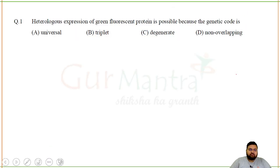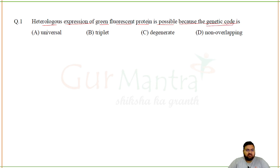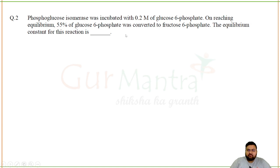Let's begin with the very first question: heterologous expression of green fluorescent protein is possible because of the genetic code being — what? The heterologous expression of GFP we can observe everywhere — that is because the genetic code is universal. The codon, i.e., the genetic code, codes for similar amino acids in almost all organisms.